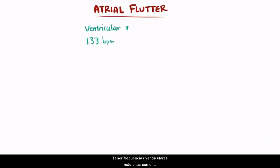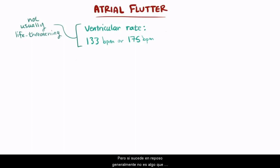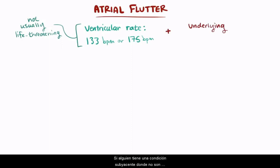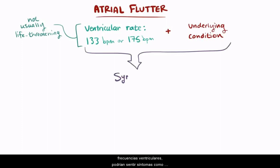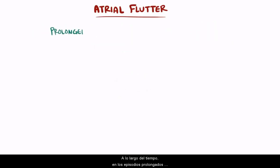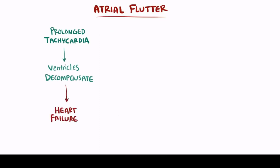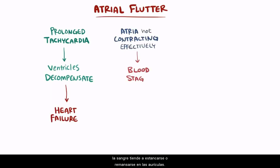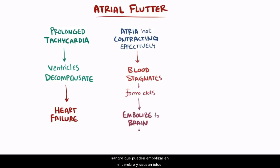Having higher ventricular rates like 133 or 175 beats per minute isn't usually life-threatening, but if it's happening at rest, it's generally not something most people want to experience. If somebody has an underlying condition where they can't tolerate high ventricular rates, they might feel symptoms like shortness of breath, chest pain, dizziness, and nausea. Over time, prolonged episodes of tachycardia can tire out the ventricles, causing them to decompensate and leading to heart failure. Also, since the atria aren't contracting effectively, blood can stagnate or pool in the atrium, which can lead to clot formation that may embolize to the brain and cause a stroke.